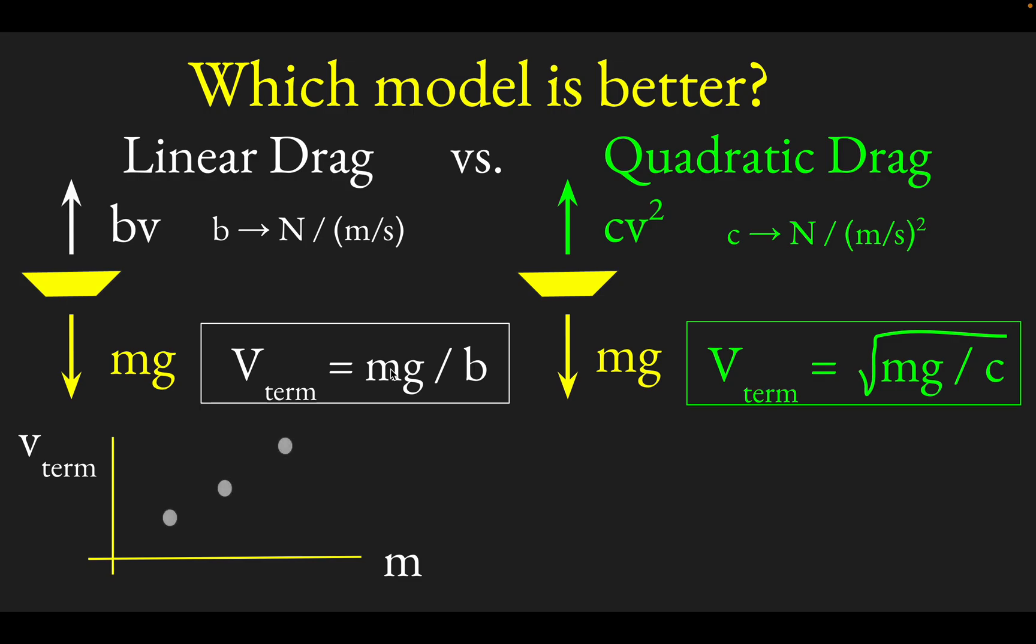If you start to graph your data, you'll find that it should be linear in this case if the linear drag model is accurate, if you plot V-terminal versus the mass. I should mention the slope here. If this model is good, if you plot V-terminal against mass, the slope would be this coefficient on the mass, which would be G over B.